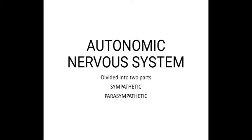The autonomic nervous system is divided into two parts: the sympathetic nervous system and the parasympathetic nervous system. The effects of sympathetic stimulation are widespread across the body, whereas parasympathetic nervous system stimulation tends to produce localized and discrete effects. Sympathetic and parasympathetic nervous systems generally have opposing effects on organs. In general, parasympathetic functions are homeostatic, whereas sympathetic stimulation prepares the organ for stressful events — this is often called the fight-or-flight response.